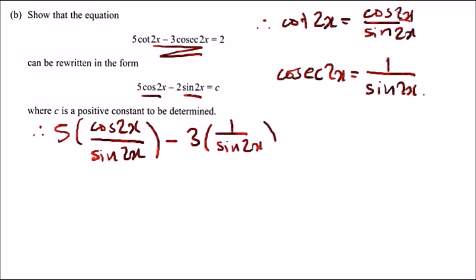Notice how we got sine 2x at the bottom. What I would do is just multiply everything by sine 2x to clear it. We're going to get 5 cos 2x minus 3 equals 2 sine 2x.